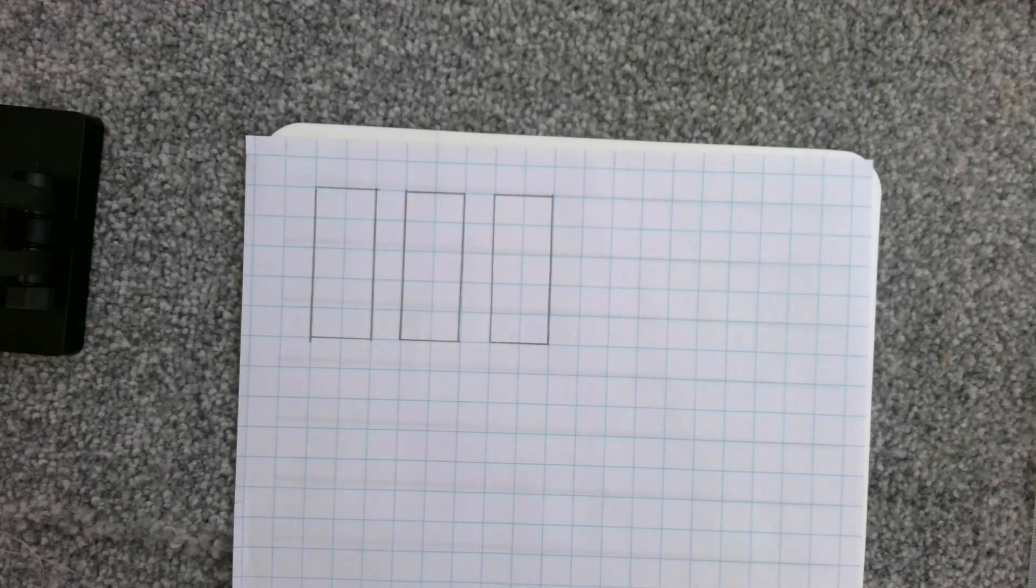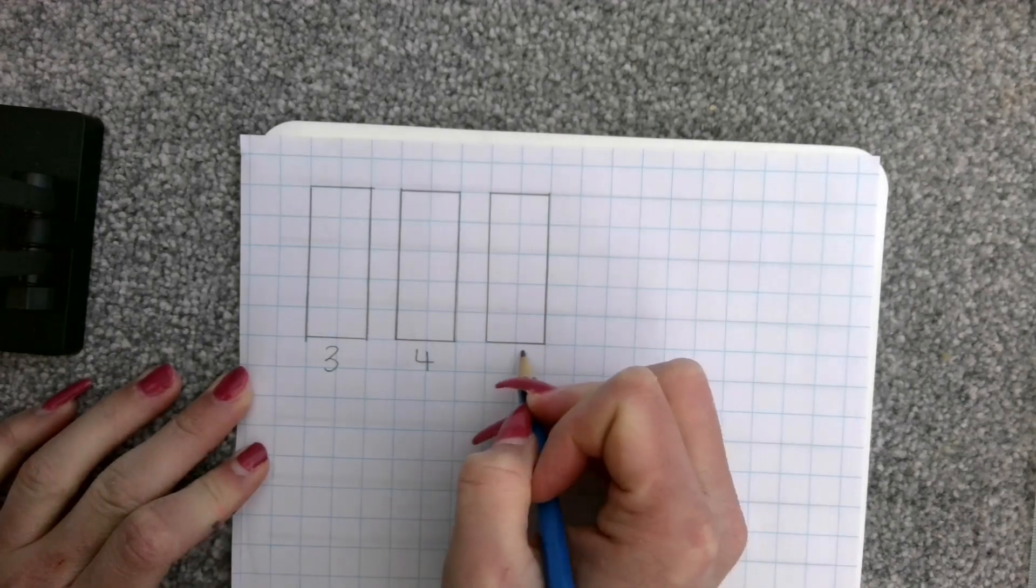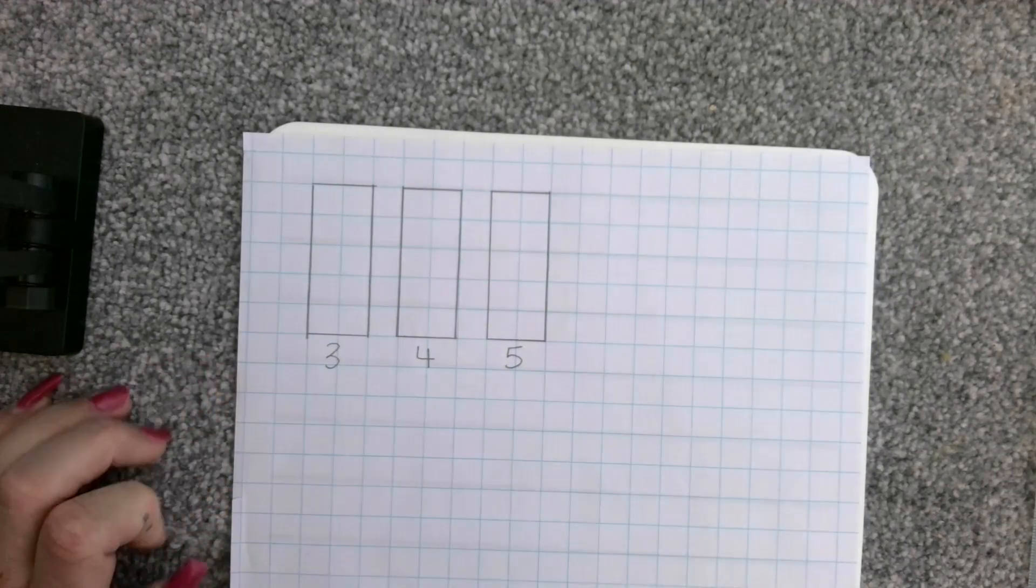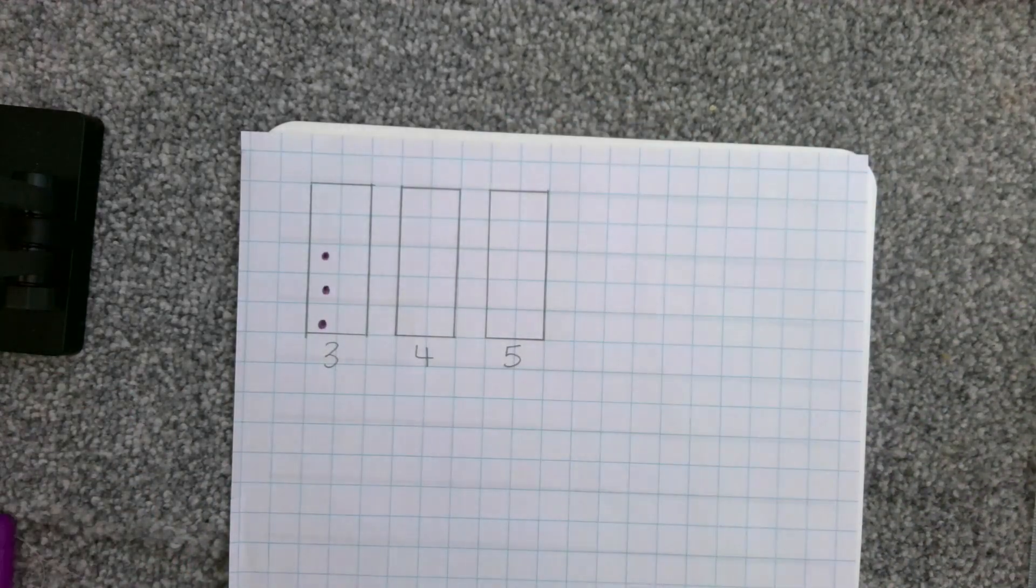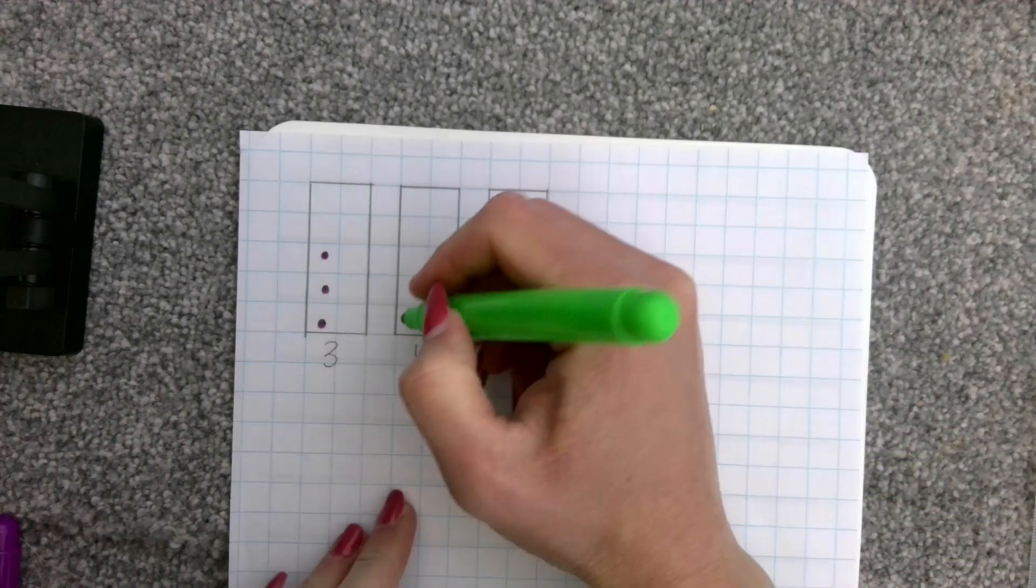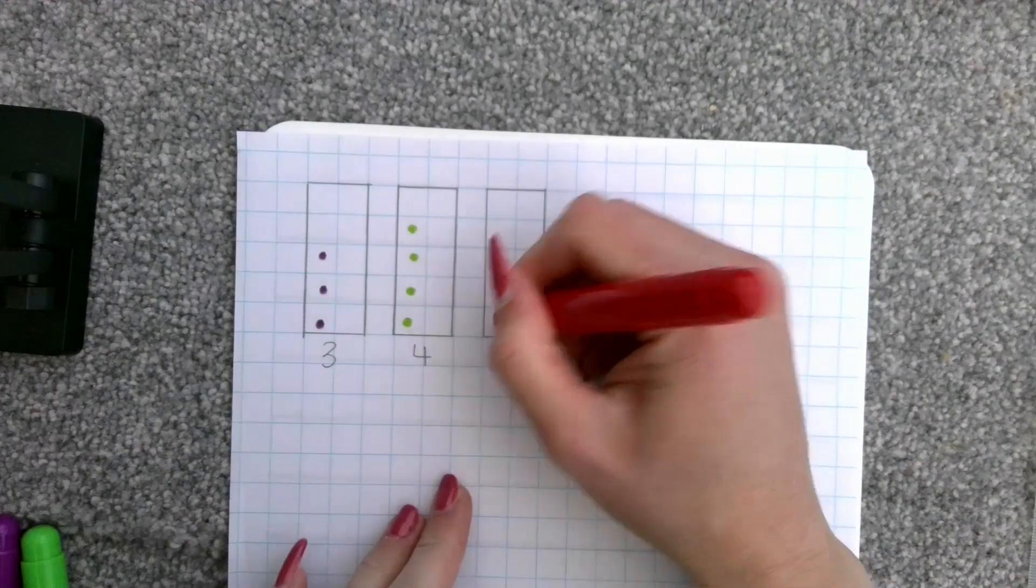Let's see if we can do the same with our second set of numbers. So, I had three, four, and five. So, I had three in here, I had four in the next box, and I had five in my last box.